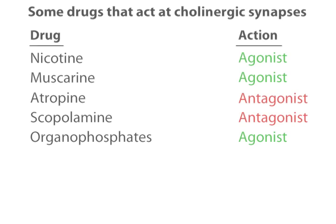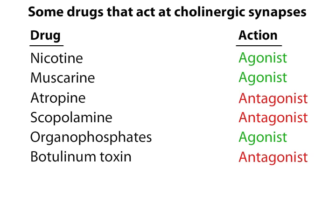Many other drugs also act at cholinergic synapses. For example, botulinum toxin is a potent bacterial poison that can grow in improperly canned food. Botulinum blocks the release of acetylcholine, resulting in muscular paralysis and asphyxiation. In much diluted form, botulinum toxin is marketed as Botox, which inhibits facial wrinkling by locally paralyzing facial muscles.